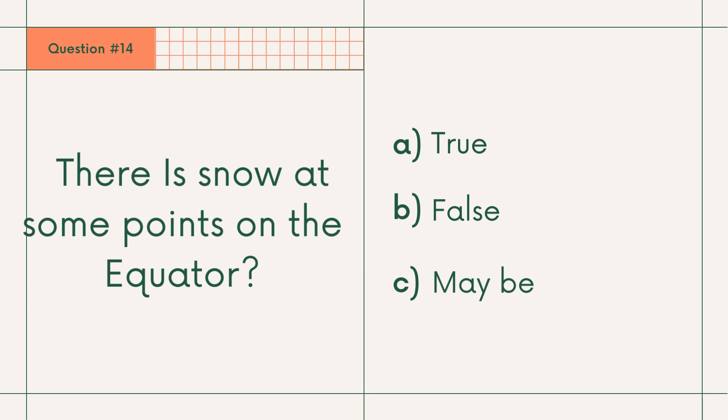Question 14: There is snow at some points on the equator — is it true? A. True, B. False, or C. Maybe. Answer: C. Maybe.